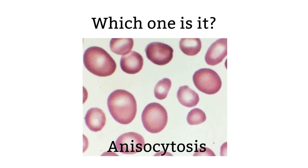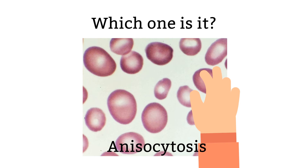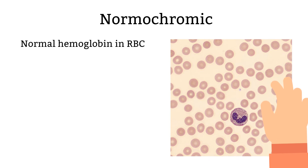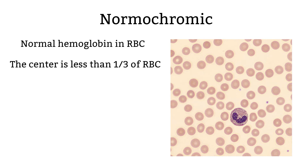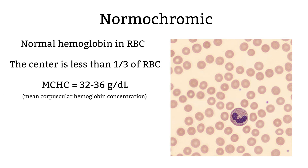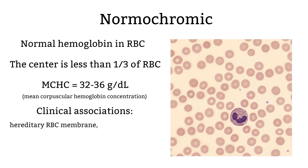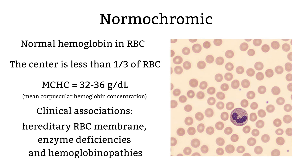Next, we will discuss terms used to describe hemoglobin in red blood cells. Normochromic is a term used to describe normal hemoglobin in red blood cells. We can tell by looking at the center of the red blood cells — the pale center area should be less than one-third of the red blood cell. The MCHC for normochromic should be around 32 to 36. There are some illnesses that associate with normochromic morphology.